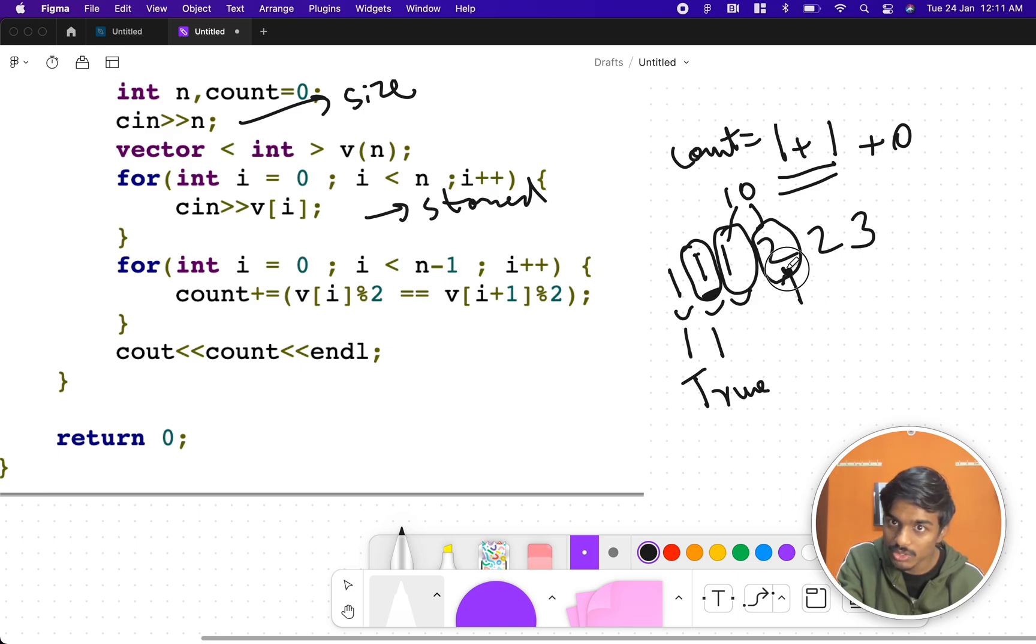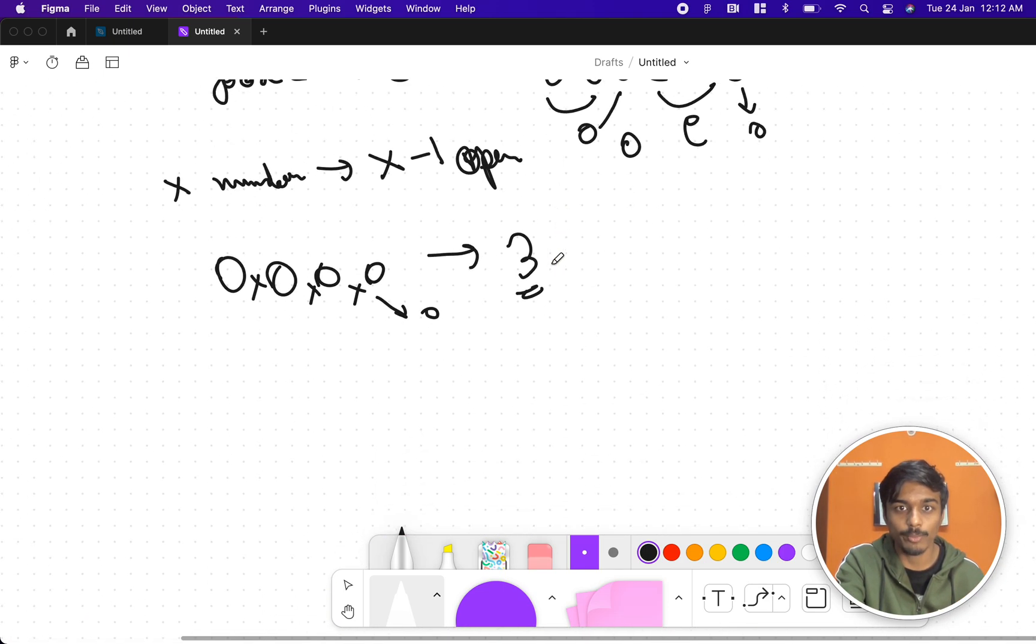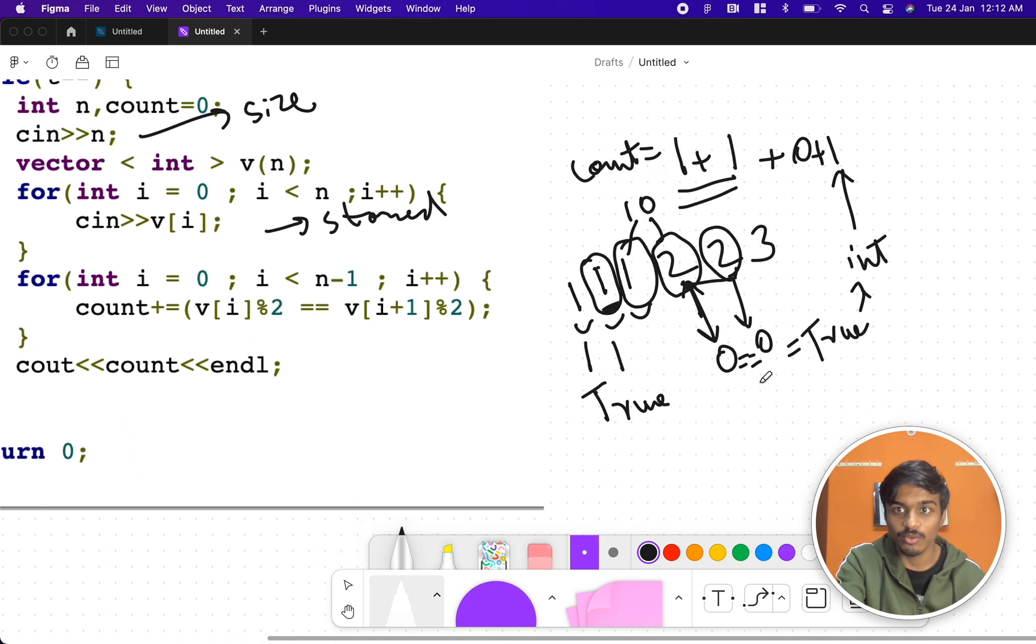Now again, 2 is here. The pointer goes here and it checks for the i plus 1th value. This also gives value a 0 because it's an even number. i plus 1 also gives you a value of 0 and 0 equal to equal to 0, it's true. So if 0 equal to equal to 0, this is true. And when we convert it to integer, you are incrementing with 1. So here two even numbers are there. That is x even numbers. We are telling x minus 1 operation should be performed. So this is the one.